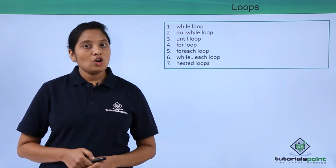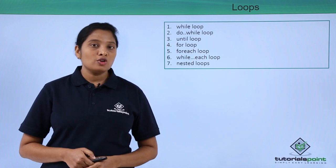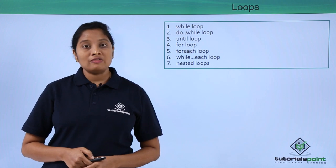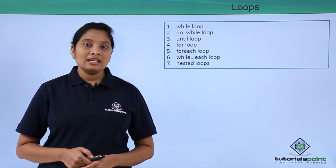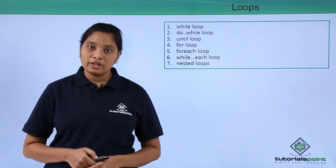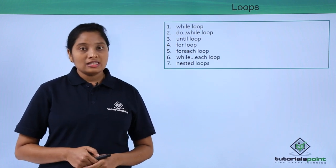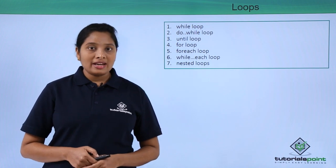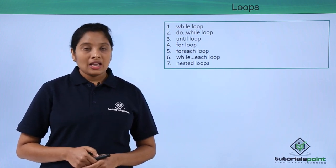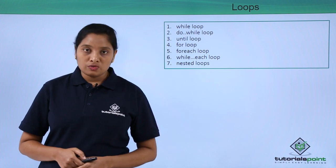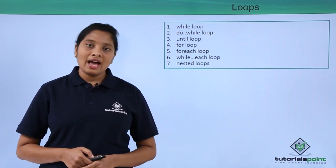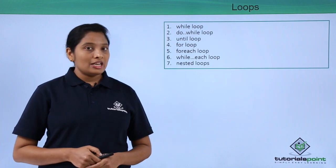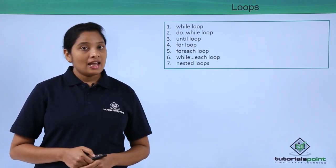Next is for loop. For loop can be used the same way how you use it in C or Java — you initialize the iterator, give the condition, then increment or decrement according to your requirement. Next is for-each loop, which you can use to iterate through an array or a hash. Next is while-each loop, which is very useful if you want to iterate through a hash. Last one is nested loops, which is very useful if you want to create a two-dimensional array.